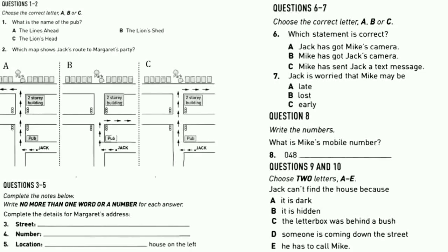Seven minutes later, he calls Margaret again, as he still can't find the house. Who's speaking? Hi, Margaret. It's Jack again. Sorry to bother you. Listen, would you mind doing me a favour? Of course. What? Could you tell Mike I have got his camera? I've tried to send him a text message, but it's not going through.